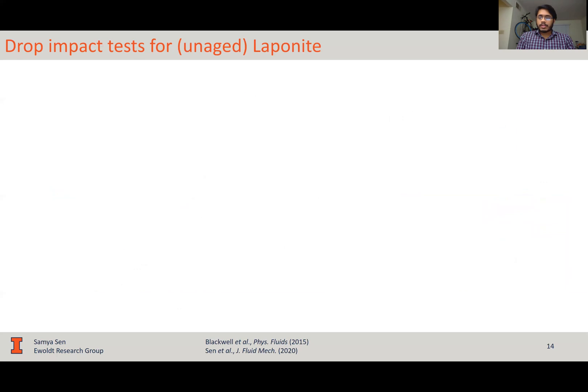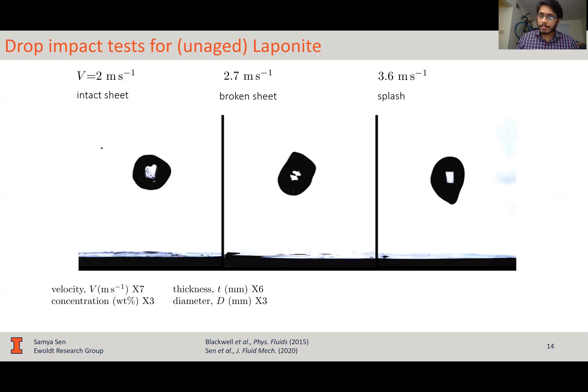Now, we jump to the drop impact test for laponite. Here, I'm comparing three tests for laponite at a constant value of coating thickness, concentration, and drop diameter. The only thing different between these three samples is that they're impacted at three different impact velocities. These samples are unaged, so they were pre-sheared and tested immediately, so that these samples are not thixotropic recovered.